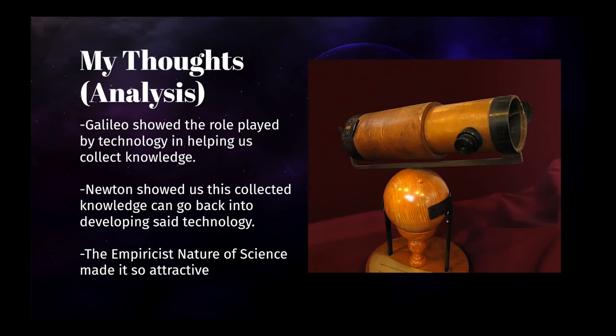Previously, the telescope was used to further Galileo's understanding of science by allowing him to see distant planets like Venus. However, in the case of Isaac Newton, he used science to further enhance the capabilities of his telescope.